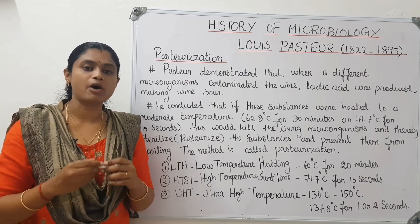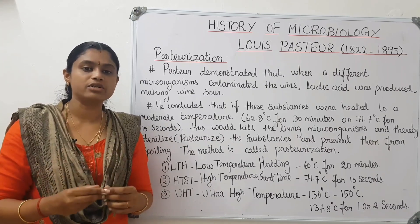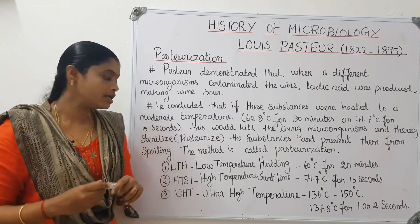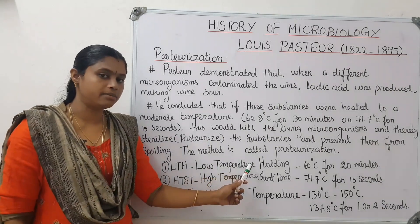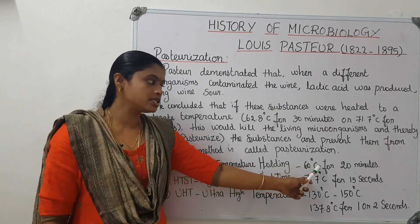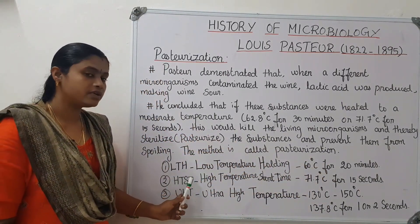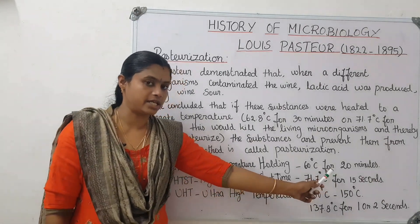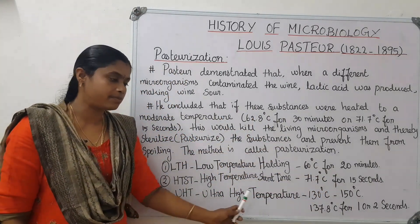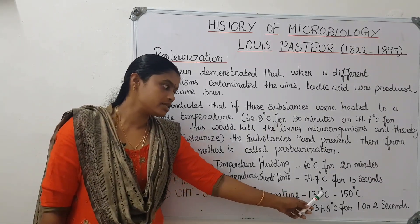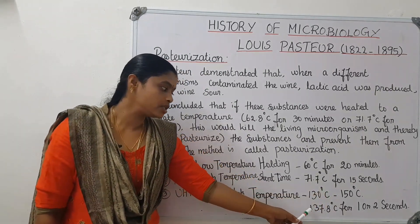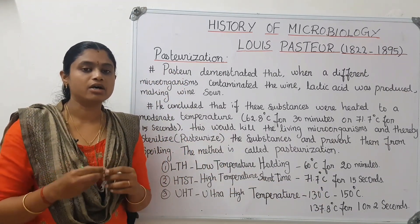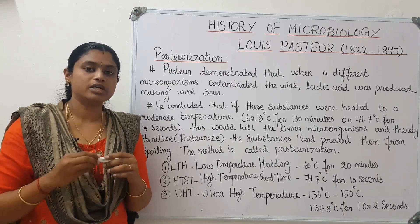In pasteurization, different types of temperatures are used. LTH stands for Low Temperature Holding: 63 degrees Celsius for 30 minutes. HTST stands for High Temperature Short Time: 71.7 degrees Celsius for 15 seconds. UHT stands for Ultra High Temperature: 130 to 150 degrees Celsius, or specifically 137.8 degrees Celsius, for 1 to 2 seconds. At this temperature, heat kills and microorganisms are destroyed.